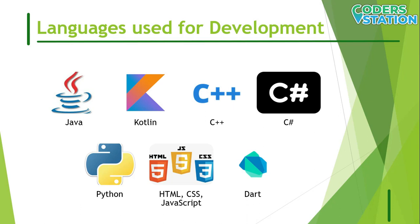C++ can be used for Android app development using the Android Native Development Kit (NDK). However, an app cannot be created entirely using C++; the NDK is used to implement specific parts of an app in C++ native code. This helps in using C++ code libraries as required. While useful in some cases, C++ is much more difficult to set up and is less flexible.